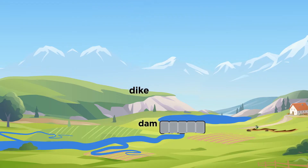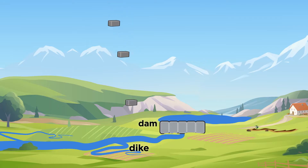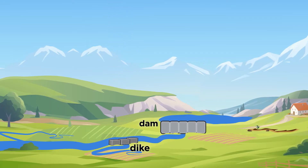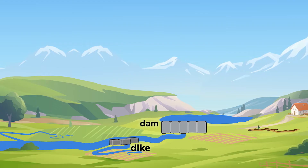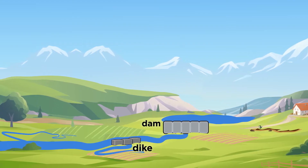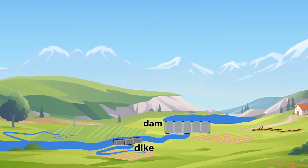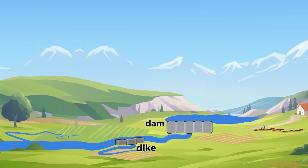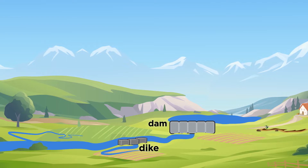A dike is a similar solution. It is another barrier that controls the movement of water to prevent flooding. Dikes are different from dams. They are built alongside the water, not across it.